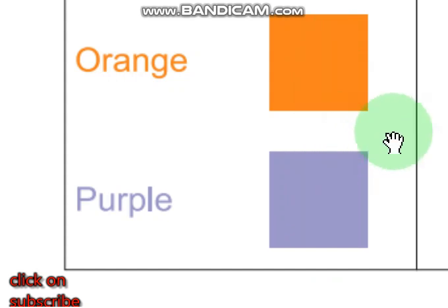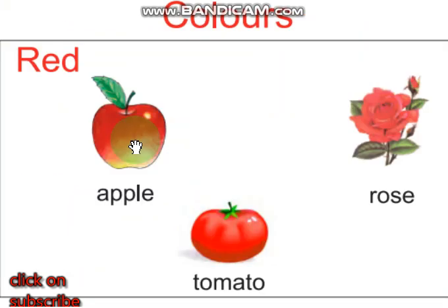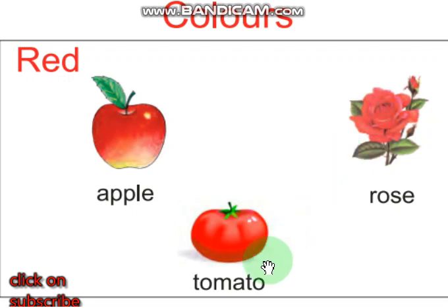Let's see different things. We can see which color is in which object. People have red. Red color. Red is red — apple, rose, tomato is red.